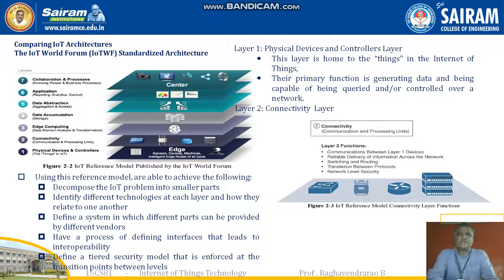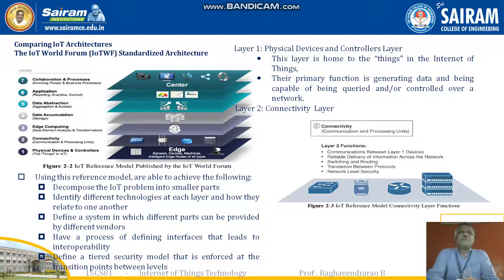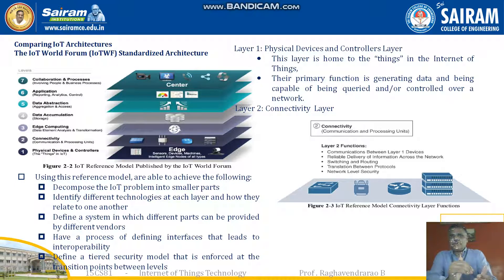The seven layers are: the physical layer, connectivity layer, edge computing layer, data accumulation and storage layer, data abstraction and aggregation layer, then applications based on controls and analytics, and finally collaborative processes communicating across different locations, people, and applications — from people to business.